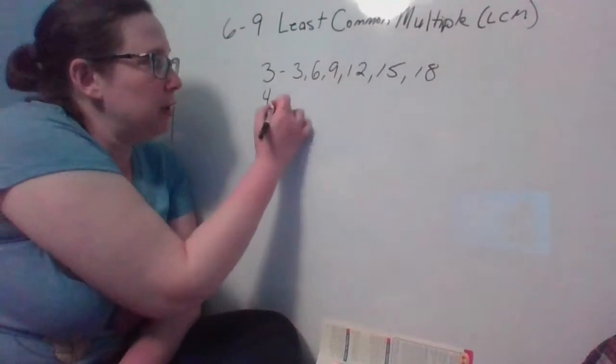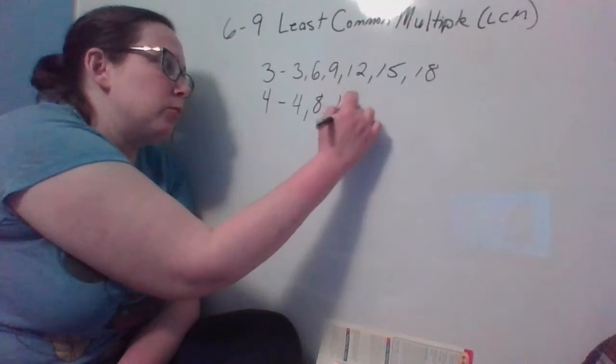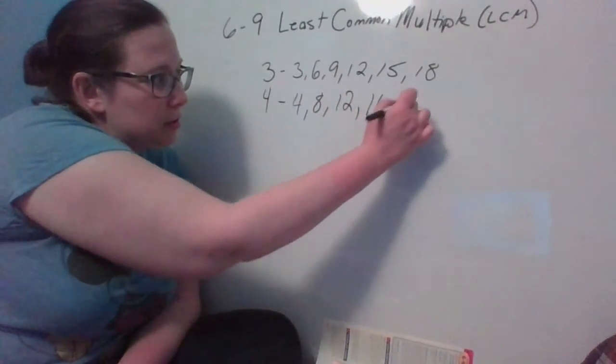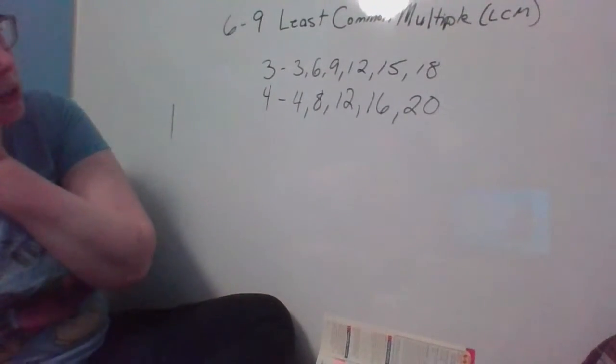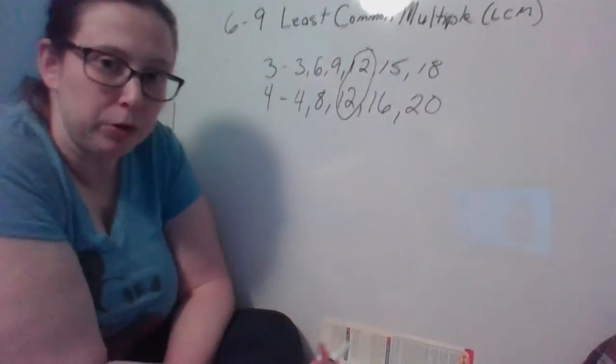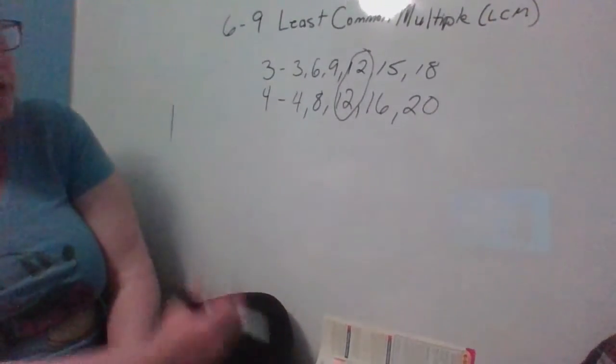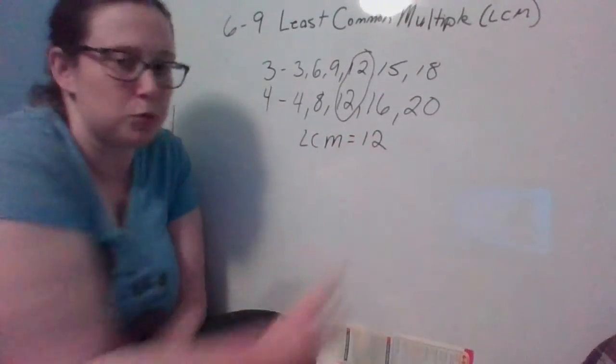And the multiples of 4 are 4, 8, 12, 16, 20. You can make some long lists and then see, oh look there's a 12 on both lists and that's the smallest one that's on both lists. So our LCM equals 12.